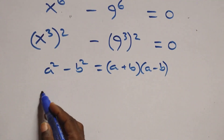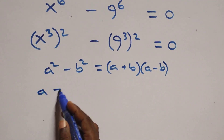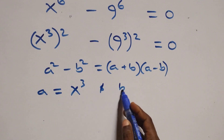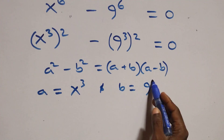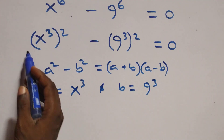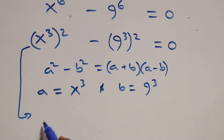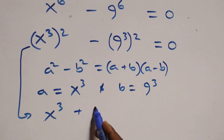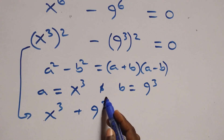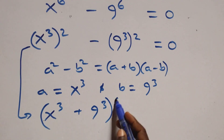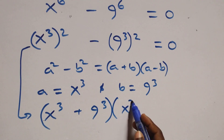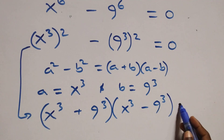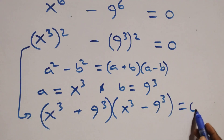Here, a stands as x raised to the power 3 and b stands as 9 raised to the power 3. So the expression becomes (x³ + 9³)(x³ − 9³) equals to 0.